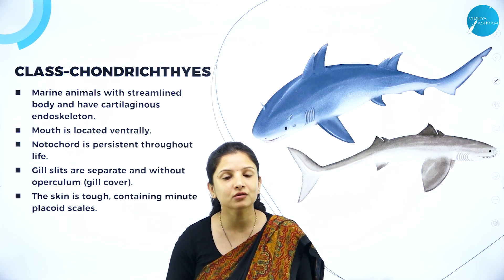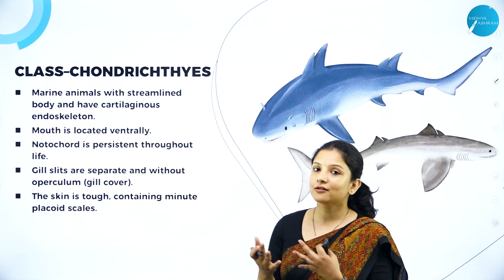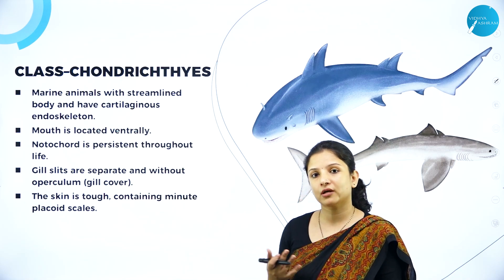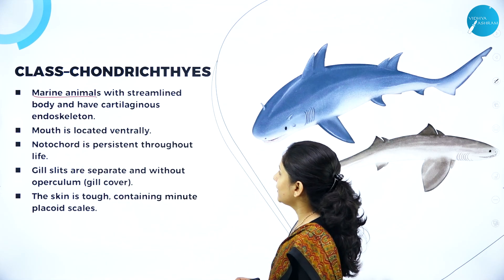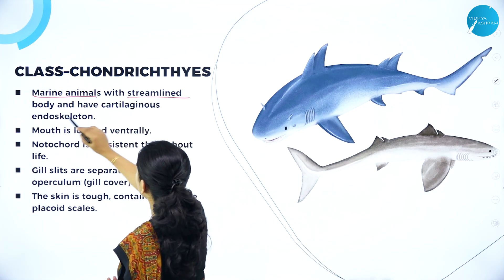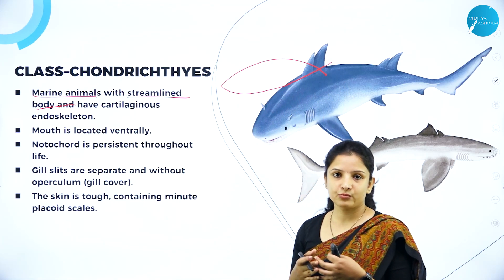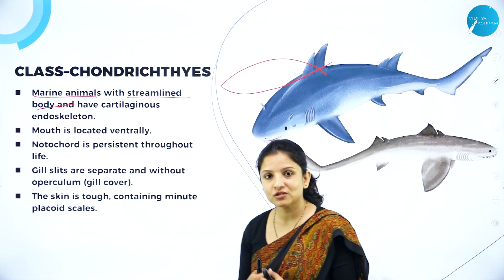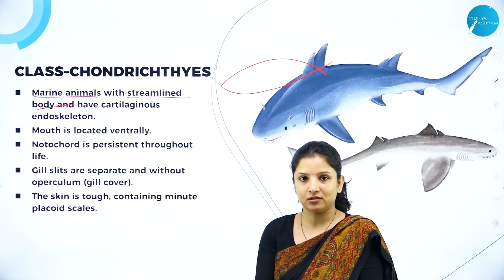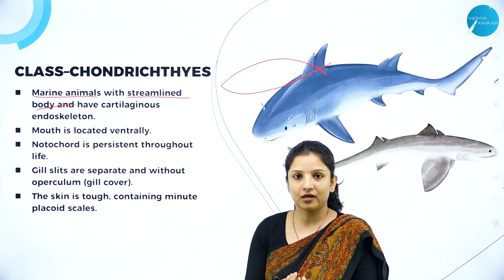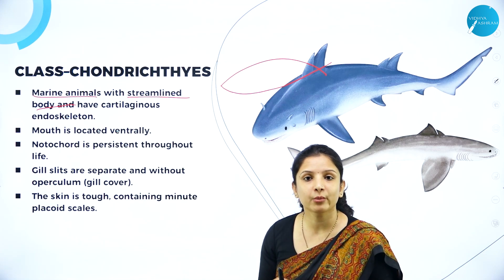In the previous session, we learnt about class Cyclostomata and got to know its characteristics. Now, class Chondrichthyes — they are also marine animals, just like Cyclostomata, and they have a streamlined body. The streamlined body looks like an aeroplane. Aeroplanes also have a streamlined body. The reason is that fishes have to swim through water currents, and to cut through the water pressure, they need a streamlined body shape so they can swim very fast.